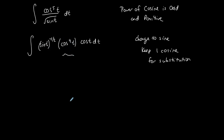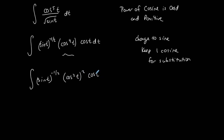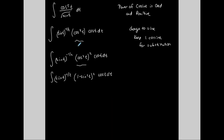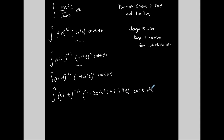Now I convert cosine to the fourth to sine using the Pythagorean identity: cosine to the fourth equals cosine squared squared, and cosine squared equals one minus sine squared t, so I have (1 minus sine squared t) all squared times cosine t. Squaring the binomial gives a perfect square trinomial: one minus two sine squared t plus sine to the fourth t, times cosine t dt.